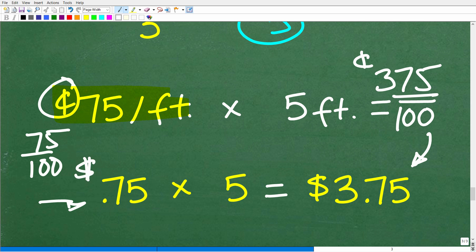All right, so once again, 75 cents is $0.75 of a dollar. So now when we do this multiplication, 0.75 times 5, we'll get $3.75.